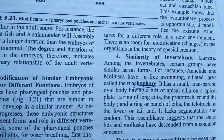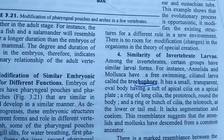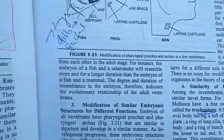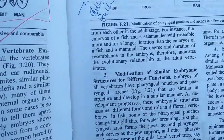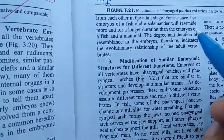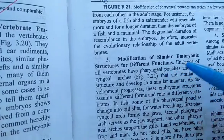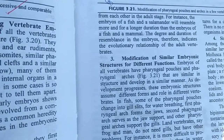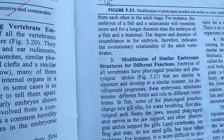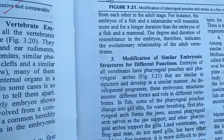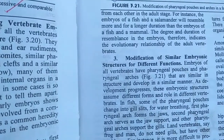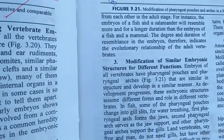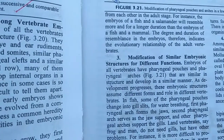There is no room for modification in the theory of special creation. So what is the meaning of this discussion? The modification of similar embryonic structures has changed according to the lifestyle and requirements of the animal. So it is very useful evidence.